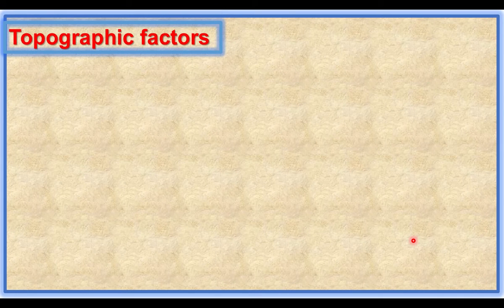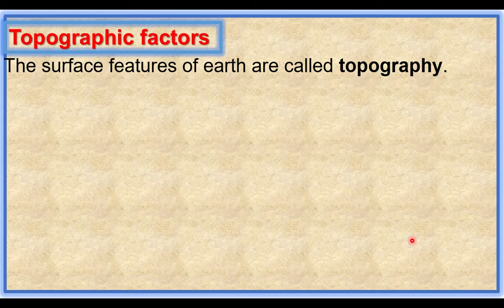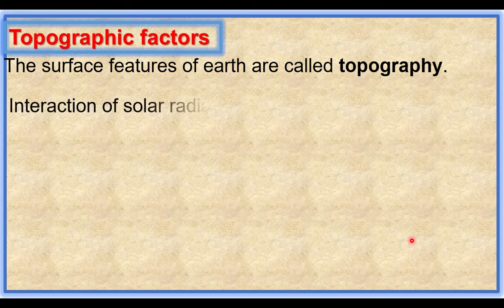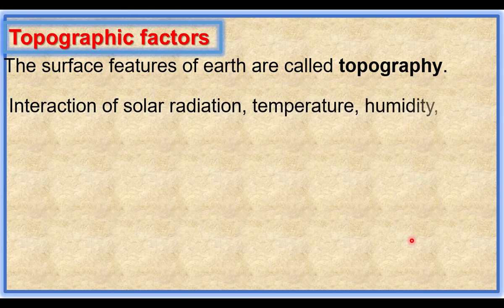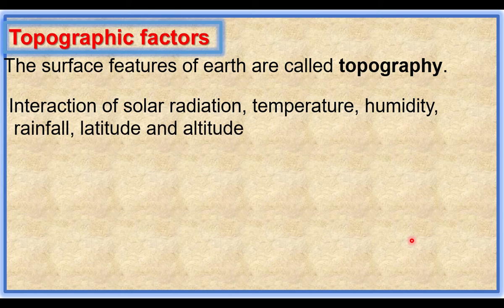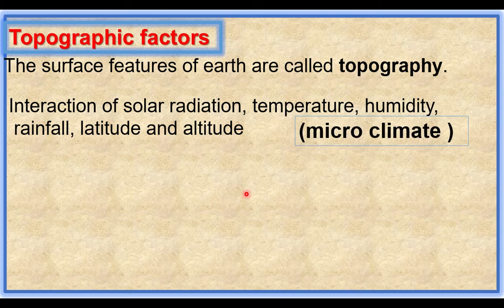Topographic factors influence the surface features of the earth. Topography means the surface features of the earth. Different areas have different vegetation — some have forests, some have grasslands — due to the interaction of solar radiation, temperature, humidity, rainfall, latitude, and altitude. These climatic factors influence the microclimate.